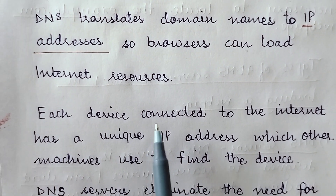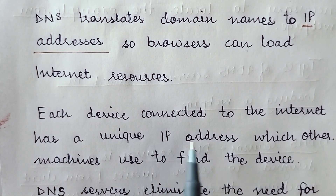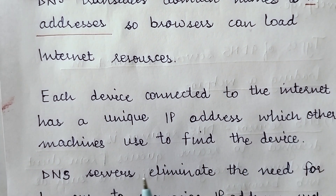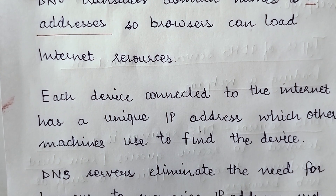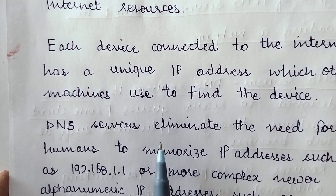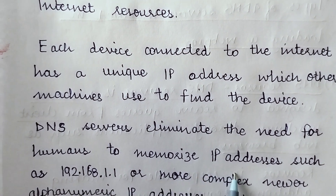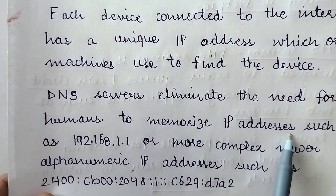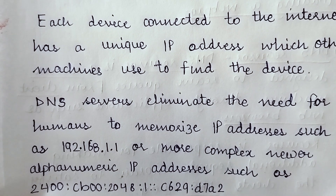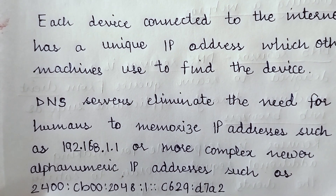Each device connected to the internet has a unique IP address, which other machines use to find the device. We have to find one particular device among all others to communicate with it, and we find it through its unique IP address. The DNS server eliminates the need for humans to memorize IP addresses — the DNS takes care of translating the domain name into the respective IP address.